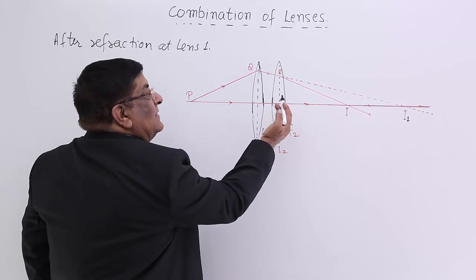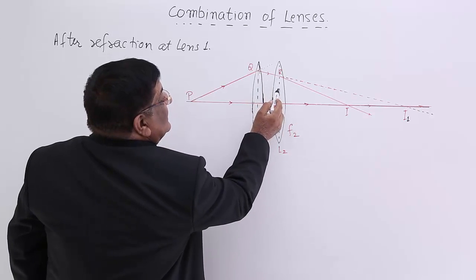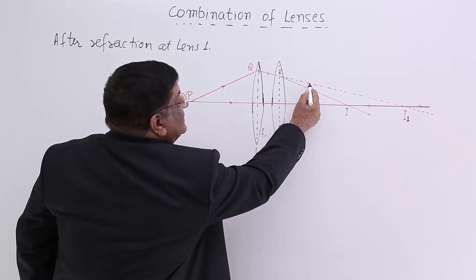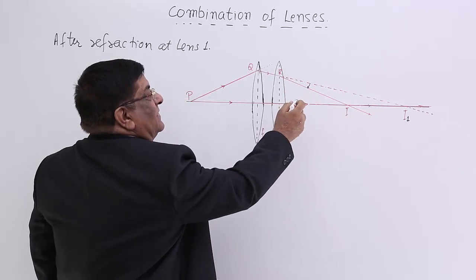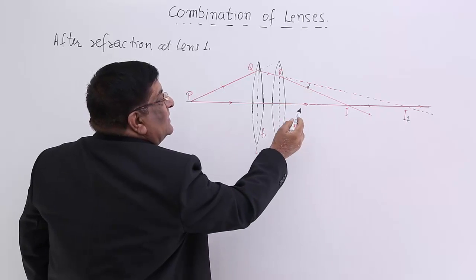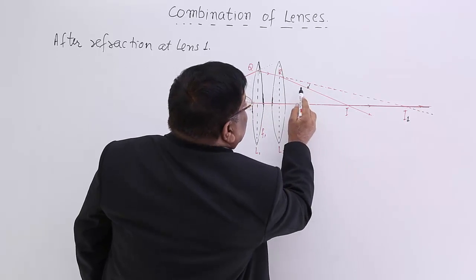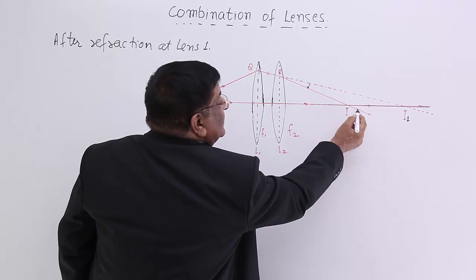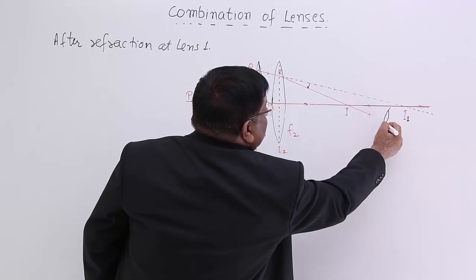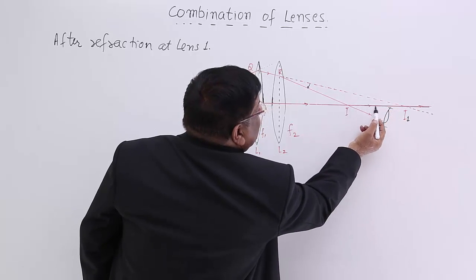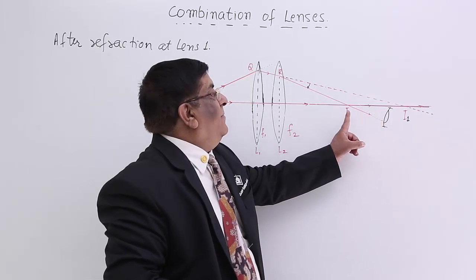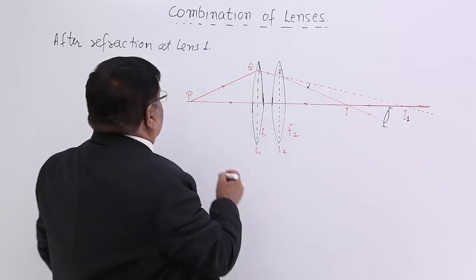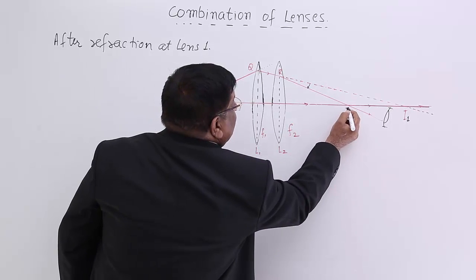Now we have placed lens 2 there. The moment we place it, the incoming ray to this lens uses its power and bends it further. The actual ray now goes in a new direction. These two rays come together and give us an image at their point of intersection. So this object P gives a final image for the combination.